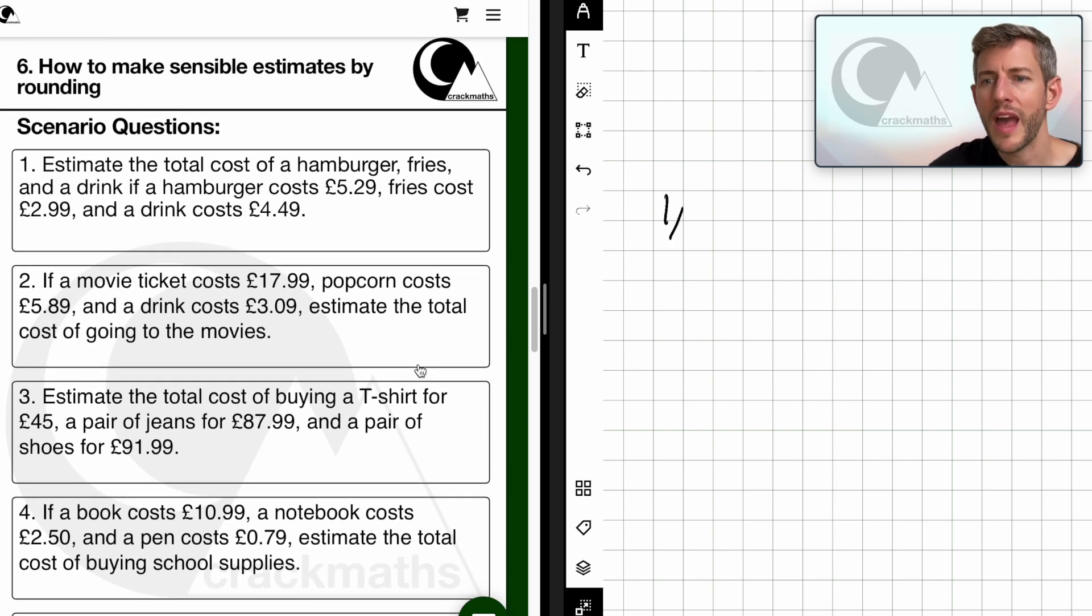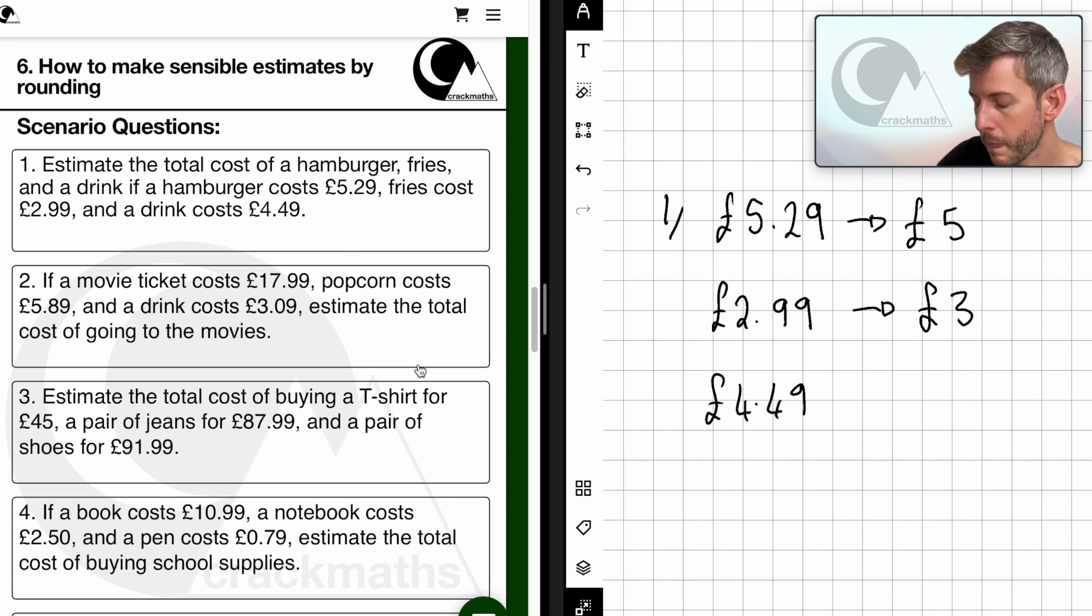So let's have a look at these scenario questions. Question one. Estimate the total cost of a hamburger, fries, and a drink if the hamburger costs £5.29, fries cost £2.99, and the drink costs £4.49. So let's look at these one by one. Remember, we're not worried about accuracy. £5.29 is roughly £5, £2.99 is roughly £3, £4.49 is roughly £4. So we've got £5 for the burger, £3 for the fries, £4 for the drink. So we can now do our calculation. £5 add £3 equals £8, and £8 add £4 equals £12. Perfect. So our estimate for the cost of this meal is £12.